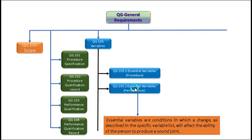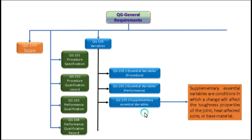ASME Section 9 QG105.2 covers essential variables for performance. These are conditions in which a change, as described in the specific variable list, will affect the ability of the person to produce a sound joint — so they are related to the ability of a welder to produce a sound joint. QG105.3 covers Supplementary Essential Variables. These are conditions in which a change will affect the toughness properties of the joint — in the heat affected zone or base metal. When a weld requires toughness, supplementary essential variables become essential variables.